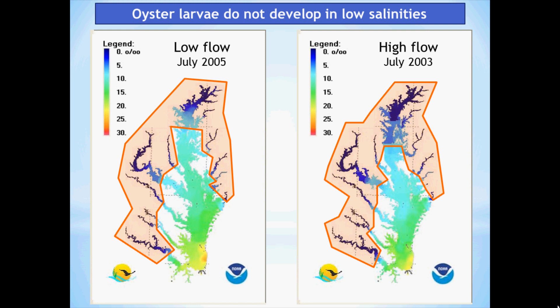We also know that oyster larvae do not develop in low salinities. On the left, we can see the low flow year, where there was more salt in the estuary, and the region of low larval development, pictured in orange, is much smaller than the region on the right during a high flow year, when low salinities during high freshwater flow push down the bay and make the region of poor development for oyster larvae larger.